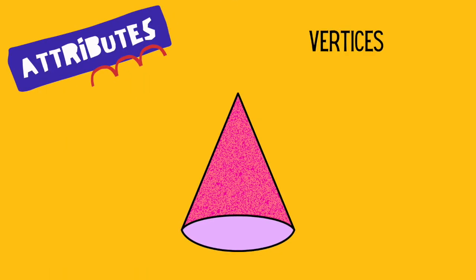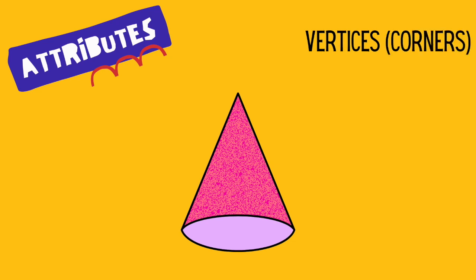Finally, let's talk about vertices. Remember, a vertex is a fancy word for corners. How many corners do you see? You're right — cones have one corner.